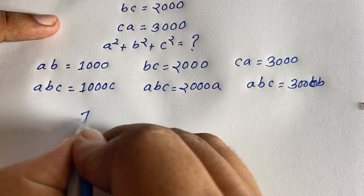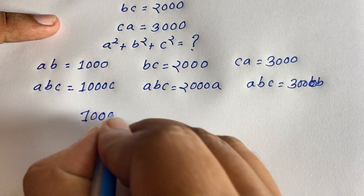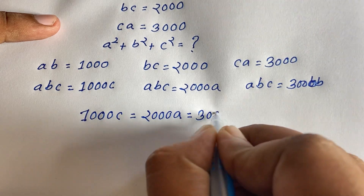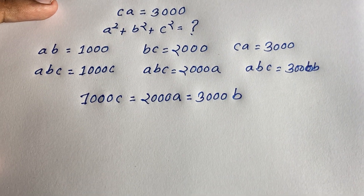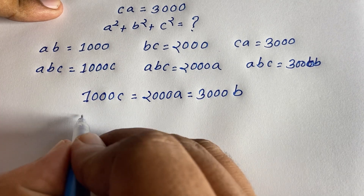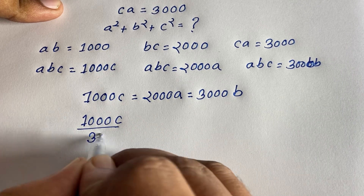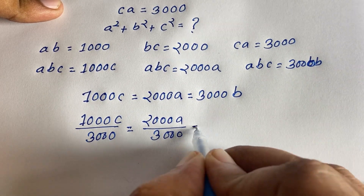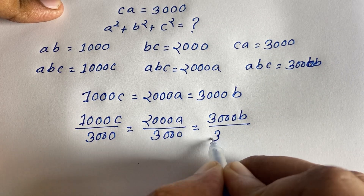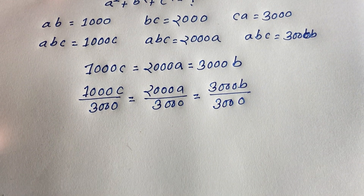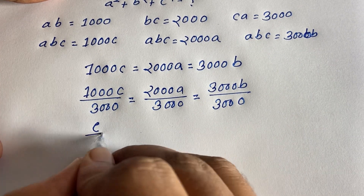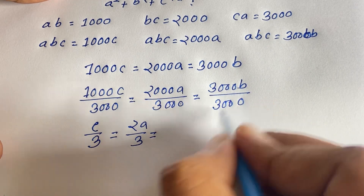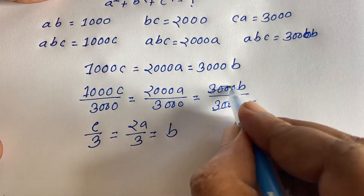Since all three expressions equal a·v·c, we can say: 1000c = 2000a = 3000v. Now I divide every part by 3000, giving 1000c/3000 = 2000a/3000 = 3000v/3000. Simplifying: c/3 = 2a/3 = v.